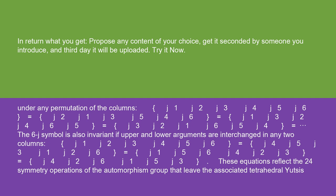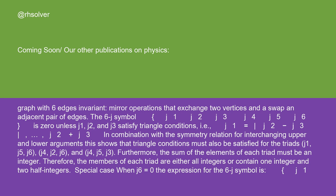The 6J symbol is also invariant if upper and lower arguments are interchanged in any two columns. J1, J2, J3, J4, J5, J6 equals J4, J2, J6, J1, J5, J3. These equations reflect the 24 symmetry operations of the automorphism group that leave the associated tetrahedral graph with six edges invariant. The 6J symbol J1, J2, J3, J4, J5, J6 is zero unless...